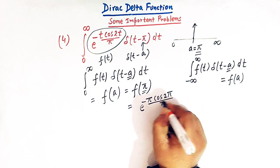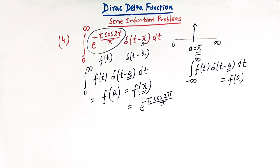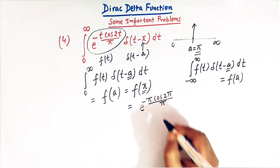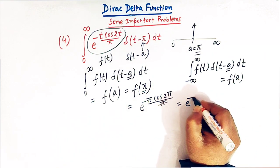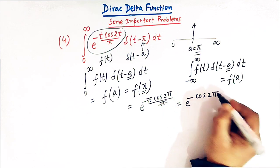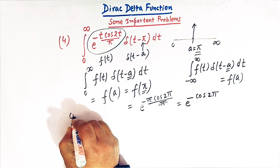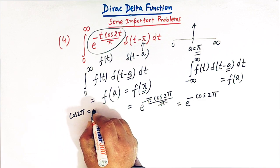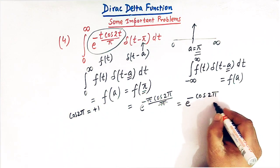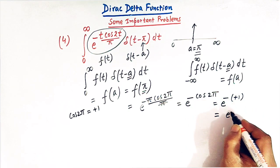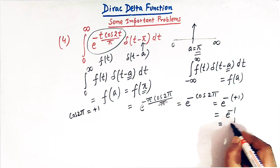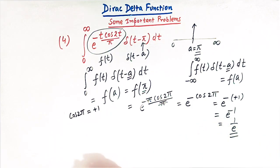So we have e raised to minus pi times cos(2π/π). The pi in the argument cancels, leaving cos of 2π. We know that cos of 2π equals positive 1. So we have e raised to minus pi times 1, giving e raised to minus 1, which equals 1 over e. Therefore the value of this integral is equal to 1 over e.